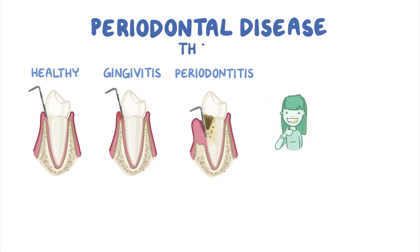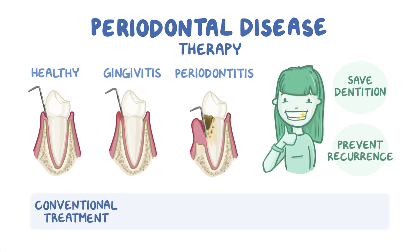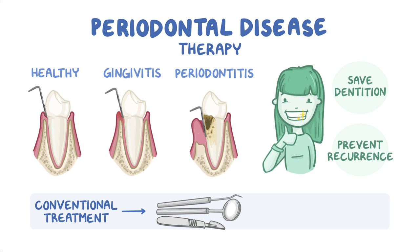The primary goal of periodontal therapy is to save the natural dentition and periodontium, but also to prevent recurrence of the periodontal disease. The conventional treatment is based on mechanical therapy, like using curettes to scale and root plane or surgical procedures. However, not all patients respond well to conventional therapy, so pharmacological agents can be a useful adjunct in these cases.